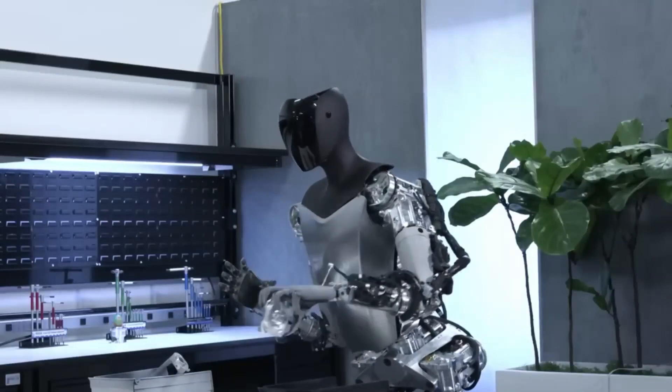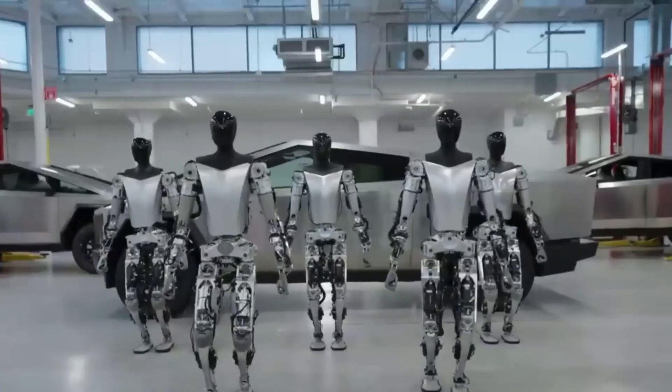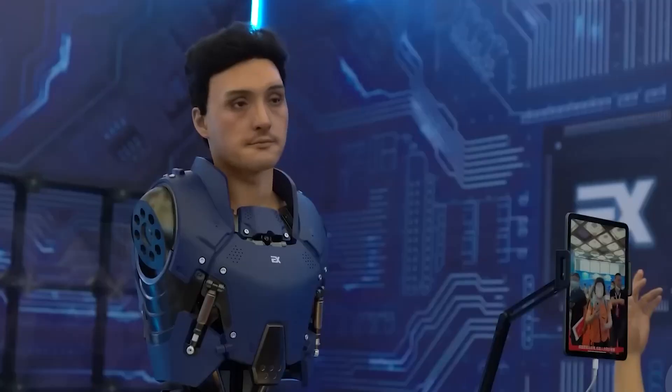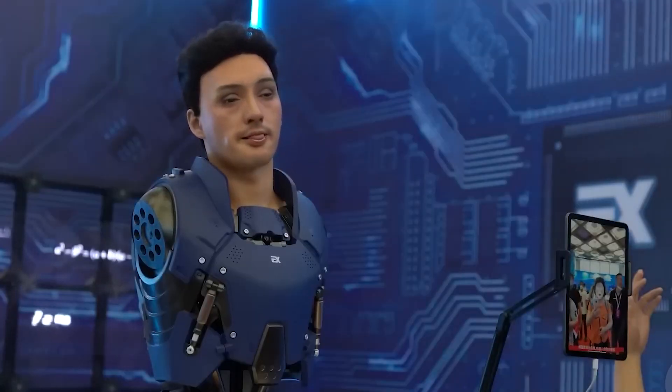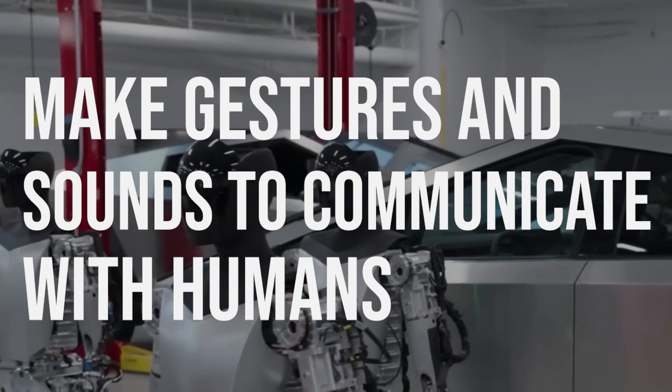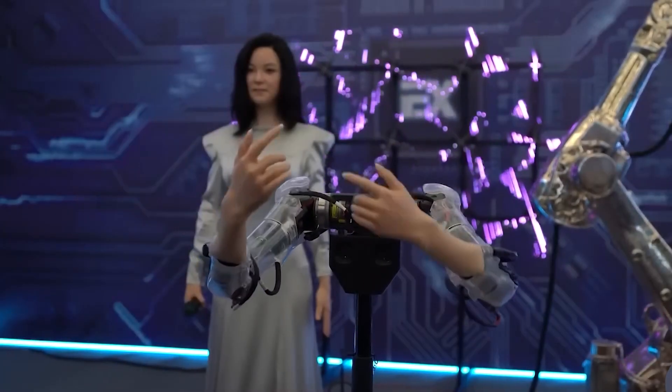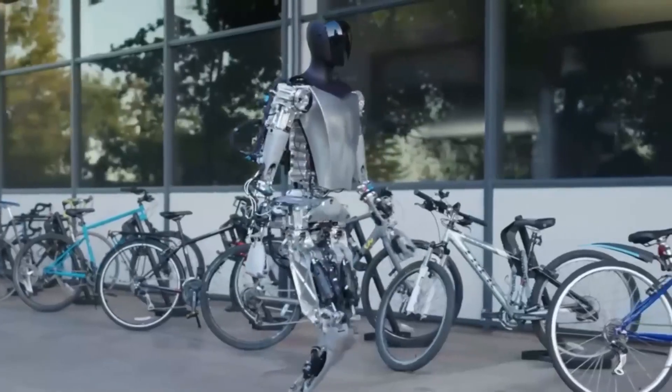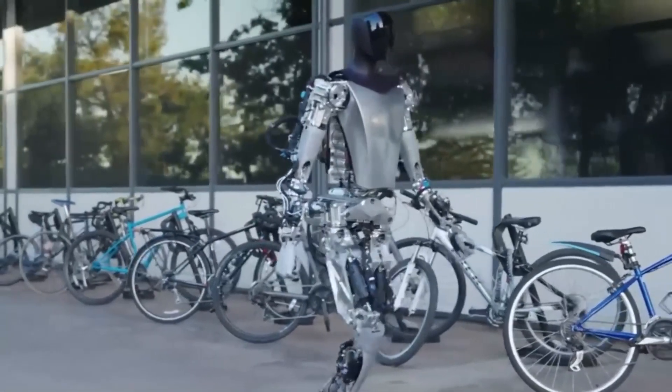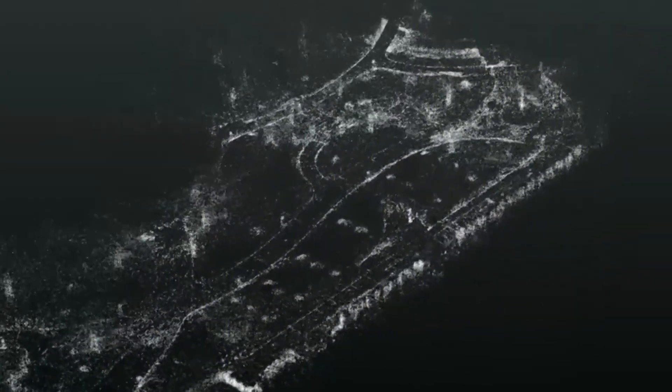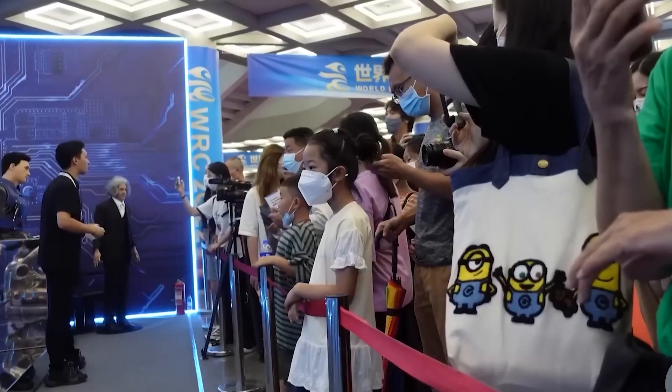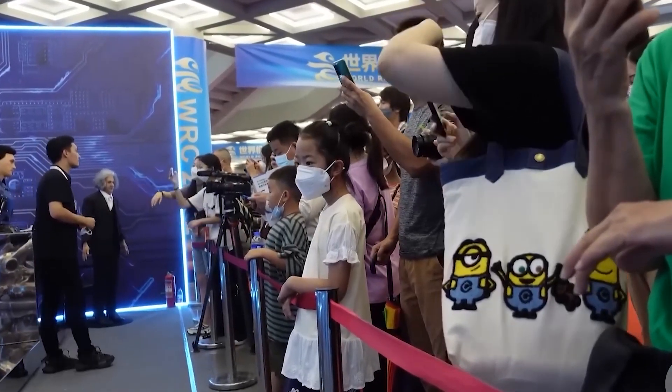Another feature of GR1 is its human-like appearance and expression. GR1 has a sleek, jet-black design and a human-like face with expressive eyes. It can also make gestures and sounds to communicate with humans. GR1's human-like appearance is designed to make it more friendly and acceptable to humans, especially those who need care and companionship. GR1 can adapt to different cultures and languages by changing its appearance and voice.